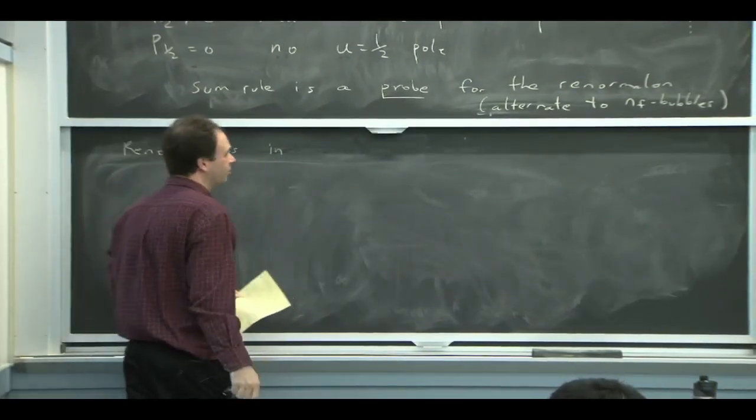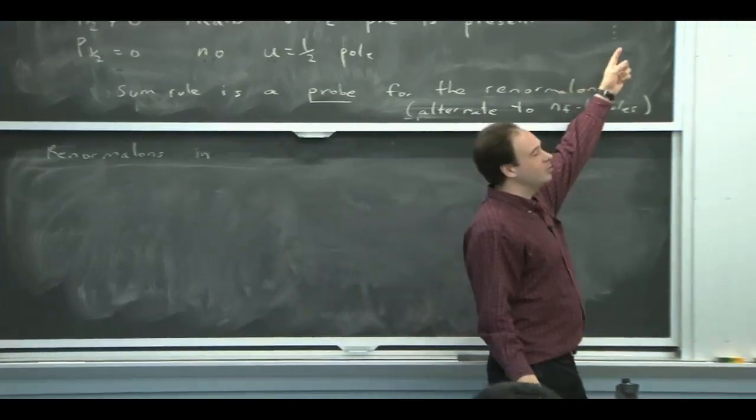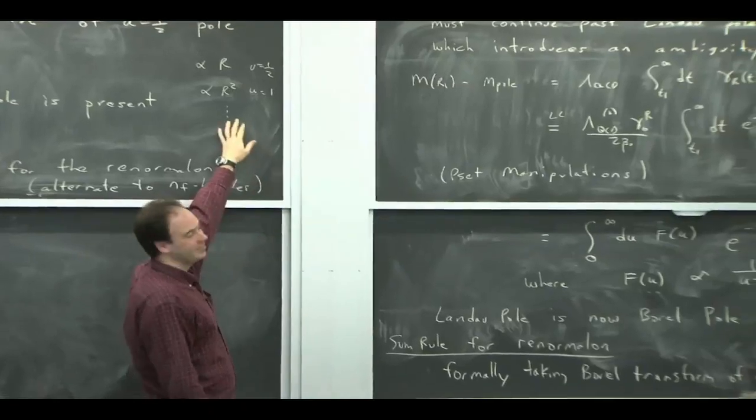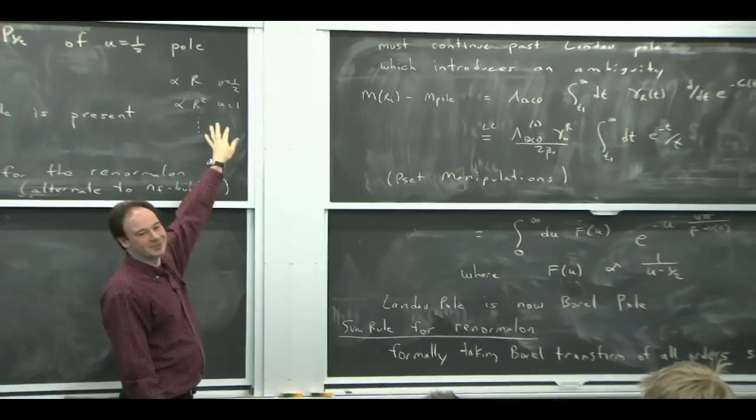And that actually might be useful, for example, if you wanted to think about higher renormalon poles, because you might want to say, well, let me get rid of the first one with whatever residue I can best approximate it for and see if there's another one underneath.